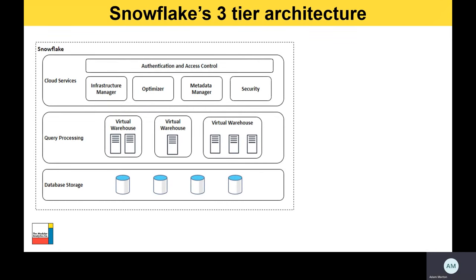Here's a diagram of the three-tier architecture in Snowflake. A useful analogy is to think of this as a postal service. The database storage is the mailroom, designed to efficiently organize and store all the different letters and parcels arriving from many different places. Some parcels are very large, some small, while others are just regular letters, but they all find their place in the mailroom.